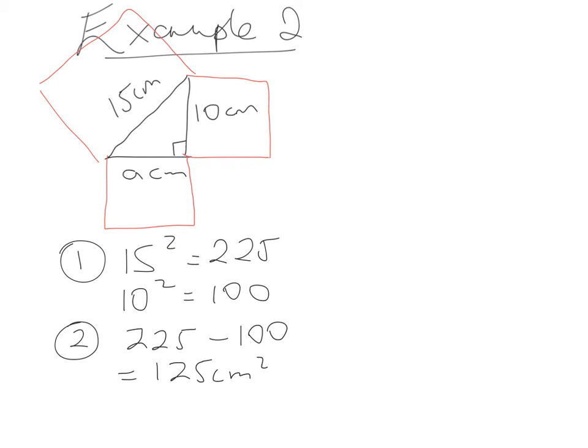So that is leaving us with the area of one of the other smaller sides of the triangle. And to finish this then we need to find the length of that side. So step three is the same as before.